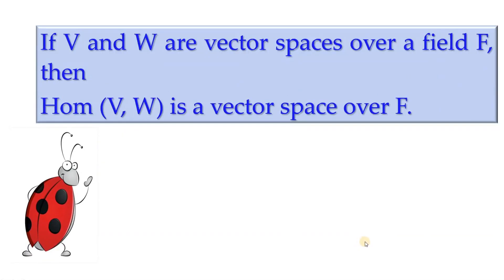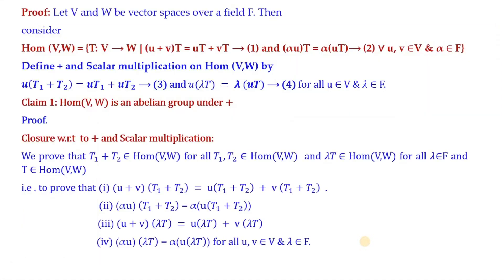In this video, the collection Hom(V,W) of all homomorphisms between two vector spaces V and W over a field F is proved to be a vector space over the same field F. Take V and W to be two vector spaces over a field F, and consider the collection Hom(V,W) of all homomorphisms T from V to W such that (u+v)T = uT + vT (equation 1), and α(uT) = α(uT) (equation 2), defined for all u,v in V and α in F.